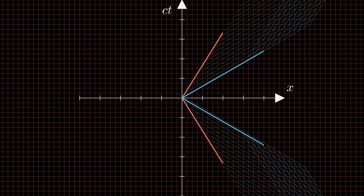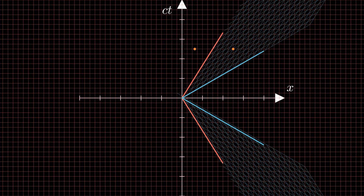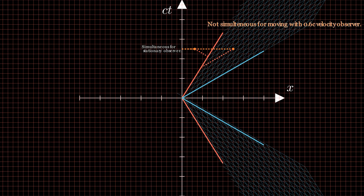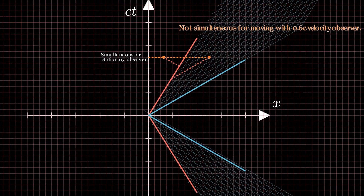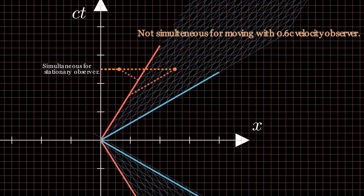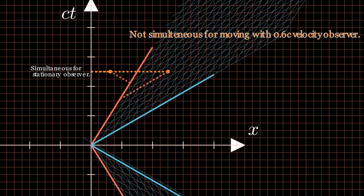Let's use our billiard example again. This time, consider two billiard balls at different positions colliding. These collisions occur simultaneously for the stationary observer. In Minkowski spacetime, this moment of collision is called an event point and is represented as a single point in spacetime. The event points for both collisions occur at the same time according to the stationary observer's reference frame. However, for an observer moving at 0.6 times the speed of light, these billiard balls collide at different times, due to their different positions. Minkowski spacetime demonstrates that an event that occurs simultaneously for one observer may happen at different times for another — this is the relativity of simultaneity, a fundamental law arising from special relativity.